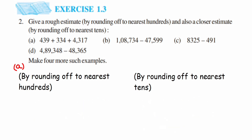The third question is 8325 minus 491. Rounding to nearest hundreds: for 325, it lies between 300 and 400 and is closer to 300, so 8325 becomes 8300. For 491, it lies between 400 and 500 and is closer to 500, so 491 becomes 500. Subtracting: 8300 − 500 = 7800.